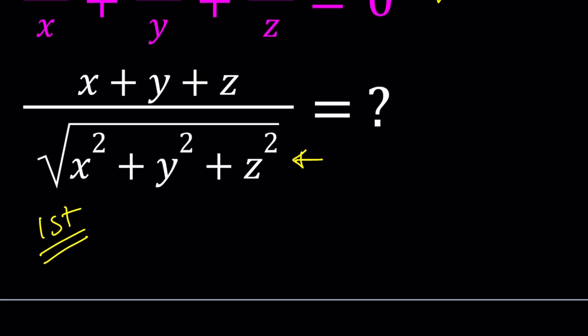If you make a common denominator, we're going to get yz plus xz plus xy, all divided by xyz equals 0.